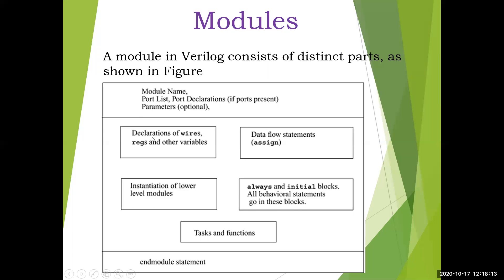So the components of the functionality of the module - these all may come or they may not come, any one block may come, these are some of the optional parts. First part you will have declaration of wires, registers and other variables. If anything related to this program we have to declare it after the port list. Then there are three types of description: data flow, behavioral, and gate level. If you are writing a data flow description you will have the data flow statement with the keyword 'assign'. If you are writing a gate level description you are instantiating lower level modules. If you are writing a behavioral block you'll be using 'always' and 'initial' blocks - these are the keywords and all behavioral statements go in these blocks. And then you will learn about tasks and functions - the sub-programs in Verilog are called tasks and functions.